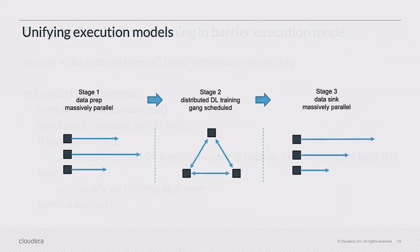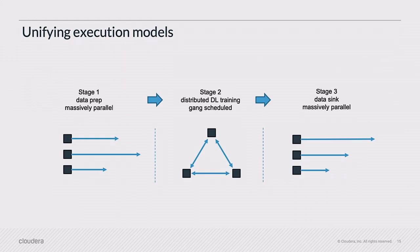What this gives you is a unifying execution model. In stage one — what you could do before and still can — you execute Spark as usual: ETL, data transformation, streaming data, and so forth. Then in stage two, using the barrier execution mode, you run your distributed deep learning training and make sure it completes. When it does, you go to stage three, which is back to typical Spark execution — pushing data out or connecting to other systems. Now using Spark you can have an entire pipeline that is properly written and actually works the way it's supposed to, which was not possible before.